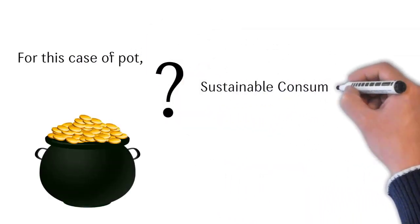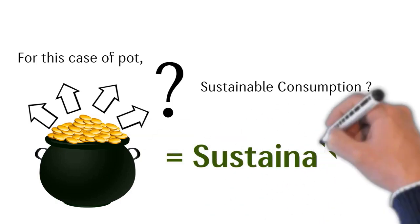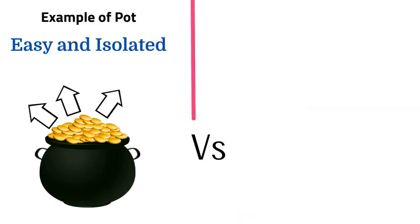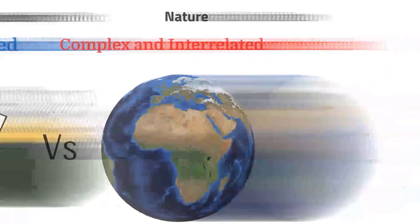What should be the optimal consumption, the optimal extraction that can be drawn from that pot? And that is sustainability. Being this case is very simplistic for our understanding, actual natural systems are far more complex and interrelated.